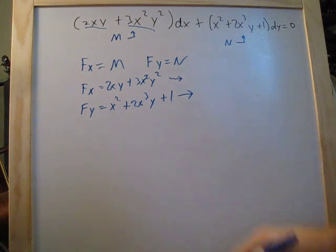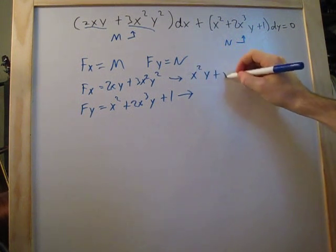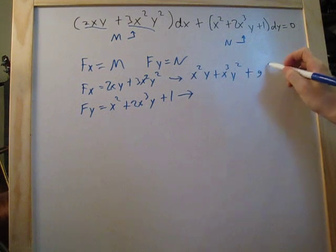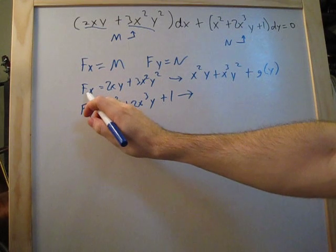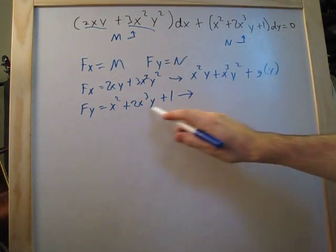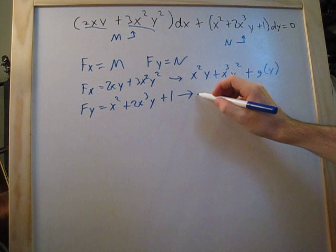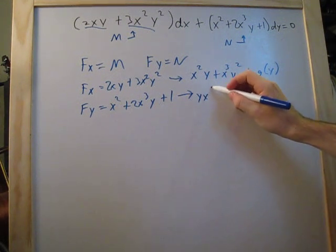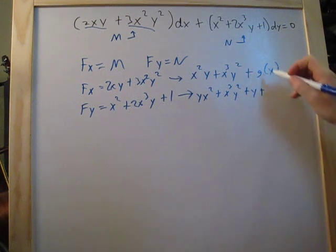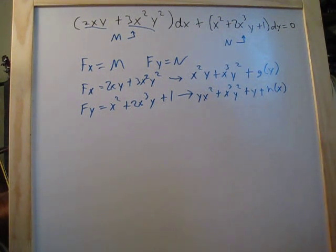Now we integrate both of these. Integrating f_x with respect to x and f_y with respect to y, both give us x²y plus x³y². When dealing with exact equations, we add an unknown term: for f_x we add g(y), and for f_y we add h(x). So integrating f_y gives us x²y plus x³y² plus y plus h(x).